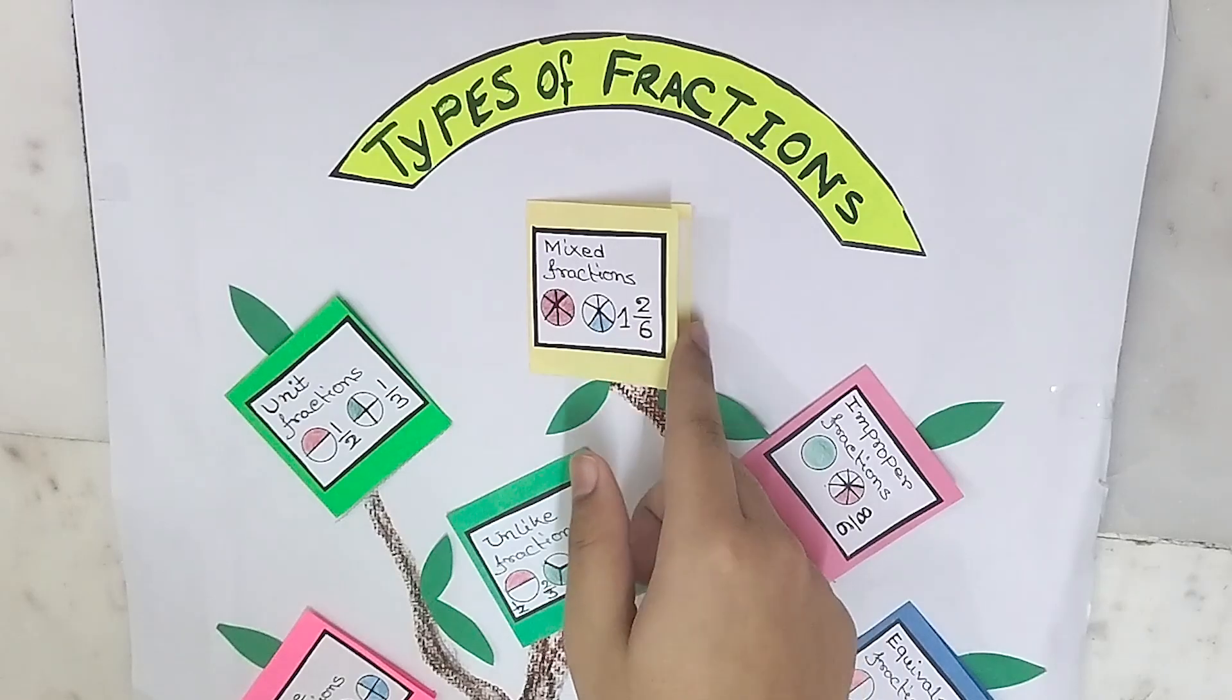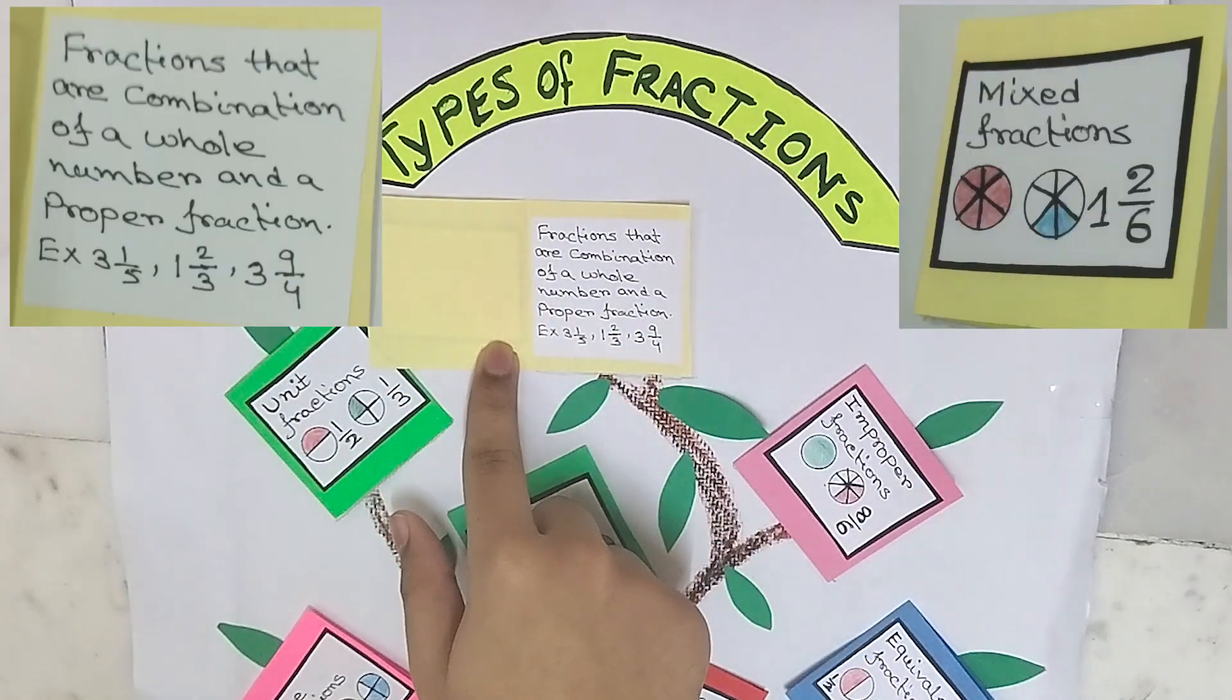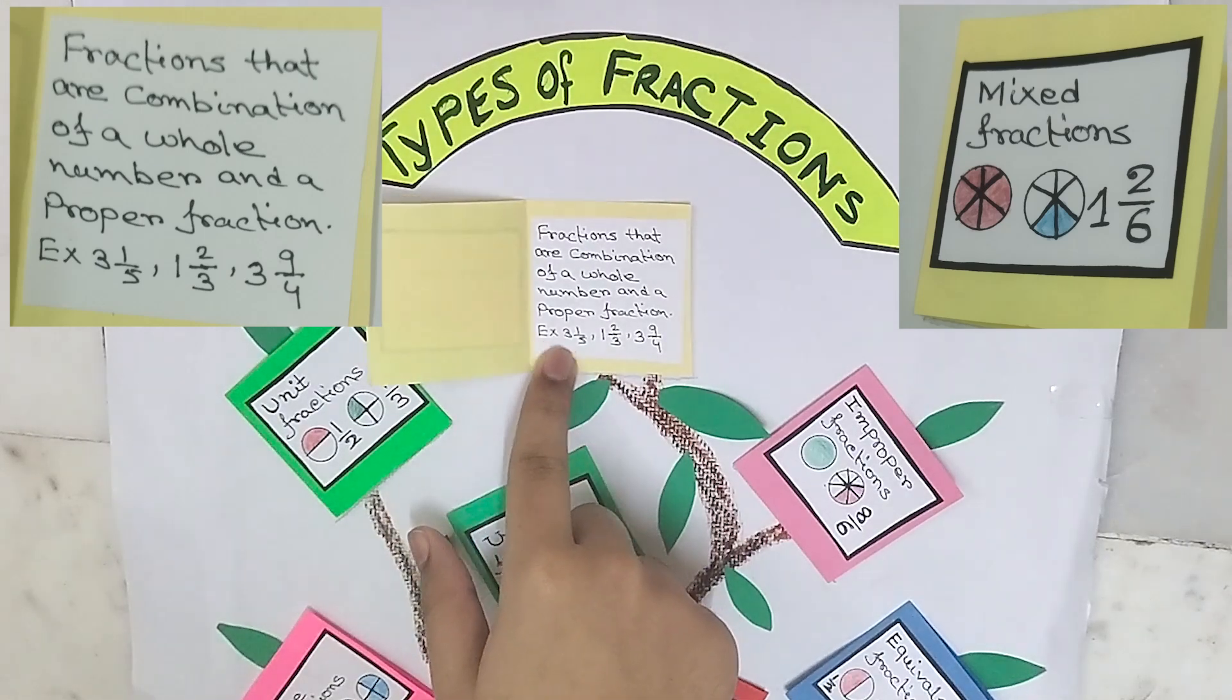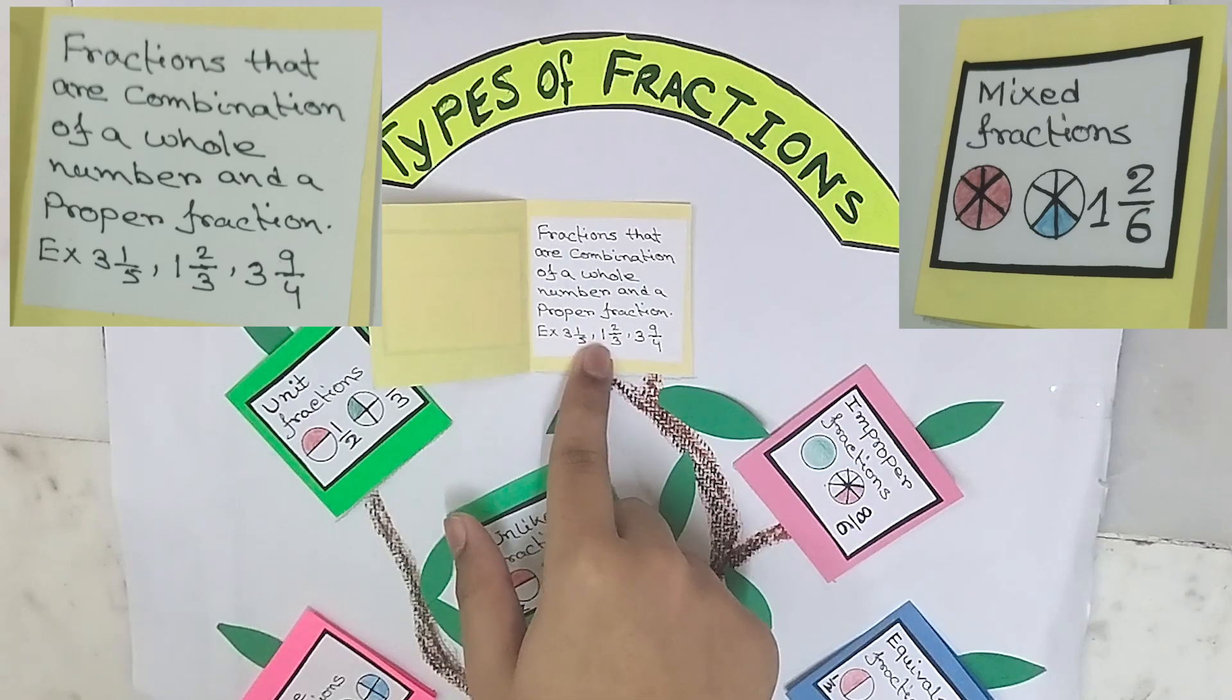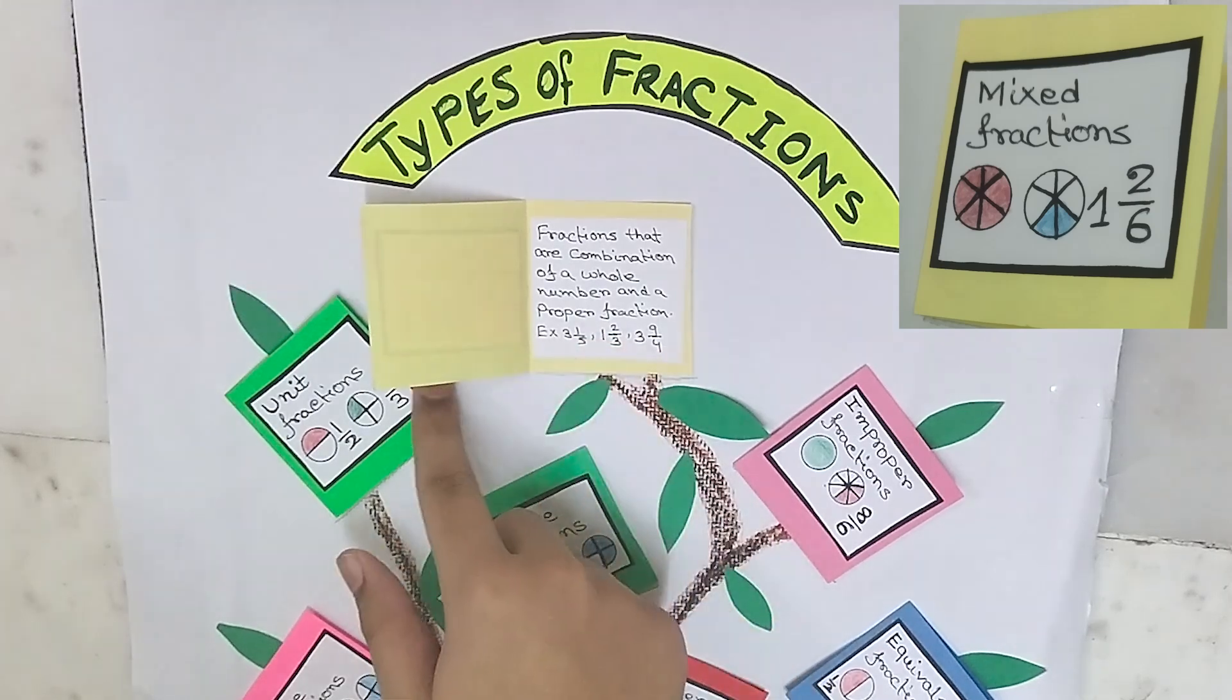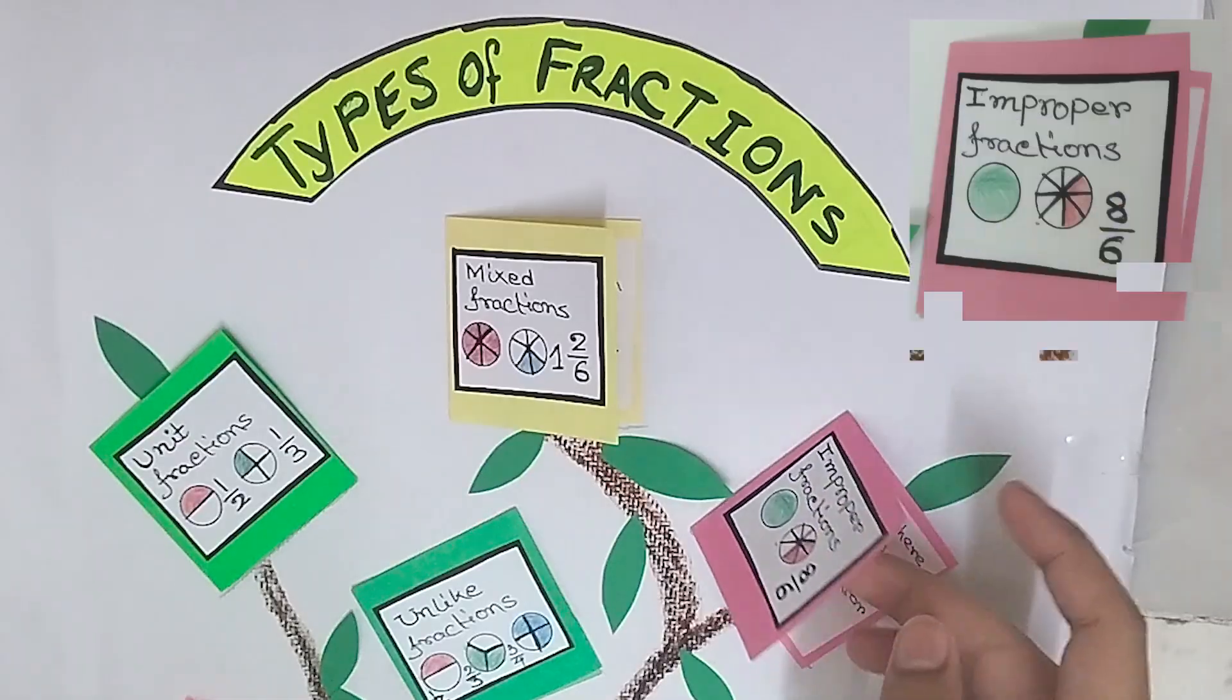Mixed fractions. Fractions that are a combination of a whole number and a proper fraction. Example: three whole one by five, one whole two by three, three whole nine by four, and here, one whole two by six.